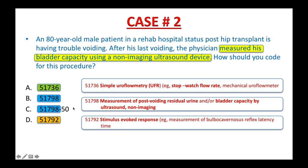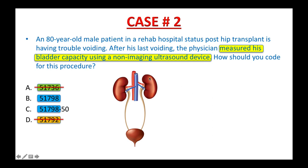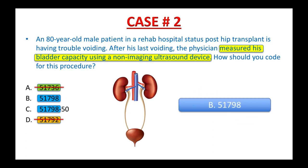If you pick 51798 — measurement of post-void residual urine and/or bladder capacity by ultrasound, non-imaging — great, but we are not done yet. We can eliminate A and D. B and C still remain. The only difference between B and C is modifier 50 for bilateral procedure. If you remember the anatomy: the urinary system consists of two kidneys and two ureters, but only one urinary bladder. So modifier 50 for bilateral or paired organs is not appropriate for the bladder. The correct answer is B, 51798.